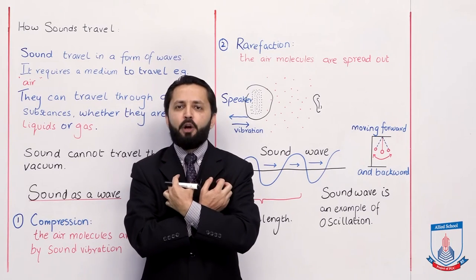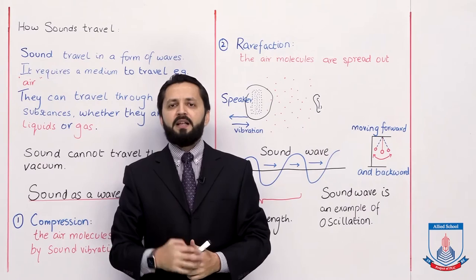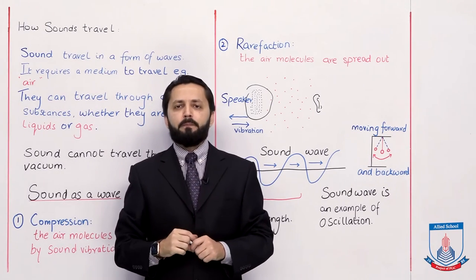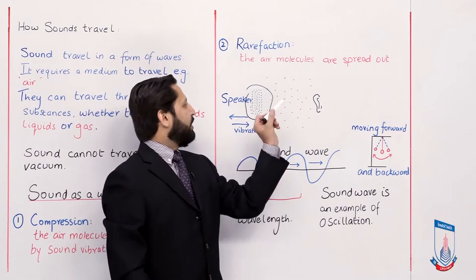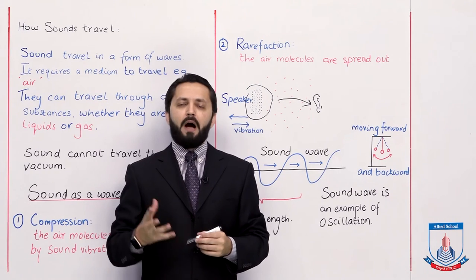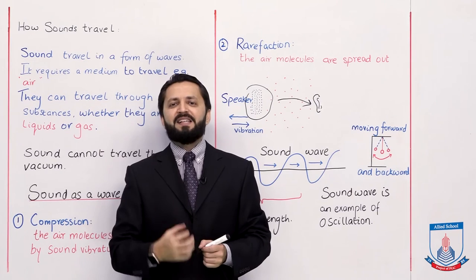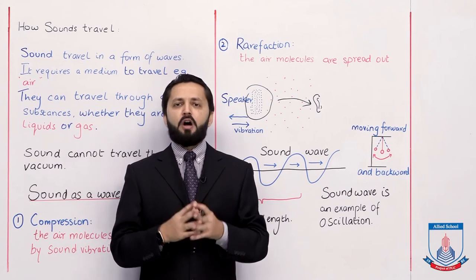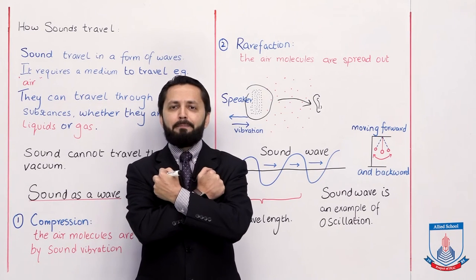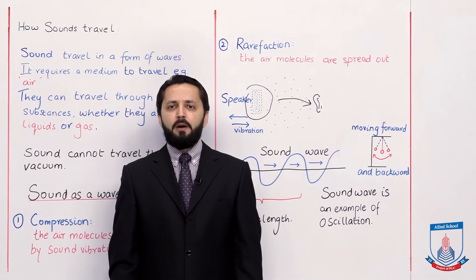The speaker compresses the air molecules toward it — this is compression. Then as it vibrates back out, the air molecules spread — that is rarefaction. Sound waves are produced through this process of compression and rarefaction, and those waves travel through the medium and reach our ears. Those same sound waves vibrate the eardrum, your brain detects the signal, and you identify the sound.